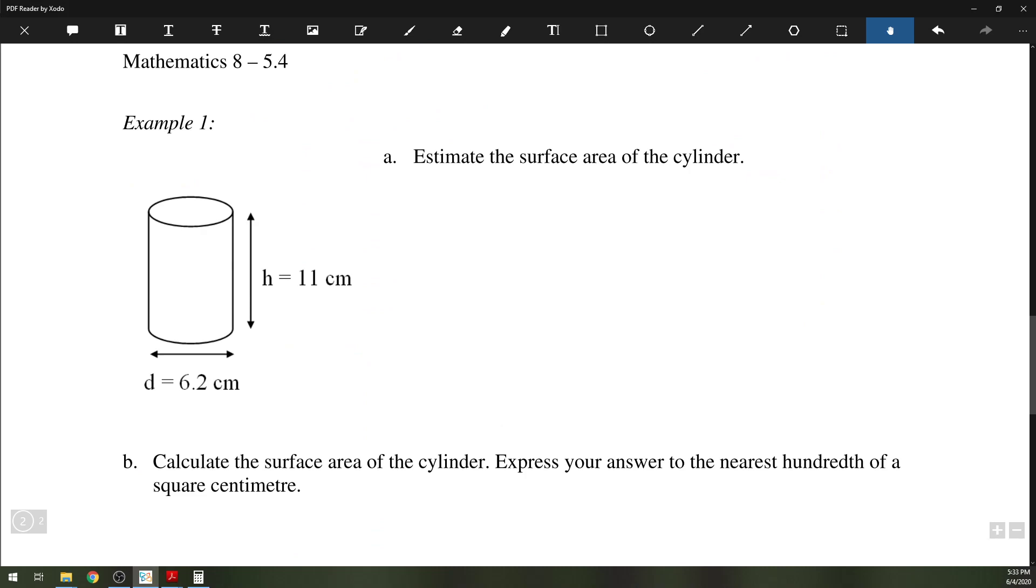So we're going to estimate the surface area of the cylinder on the left. So usually when we estimate, we just use simpler numbers, so the height is approximately 10, for example, and likewise, the diameter is around 6. So then the radius would have been 3.1 centimeters, which is approximately 3 centimeters.